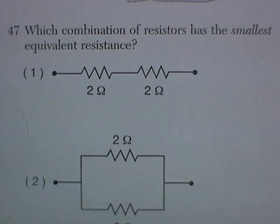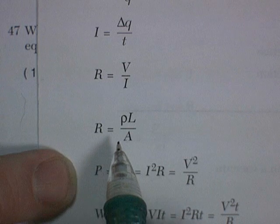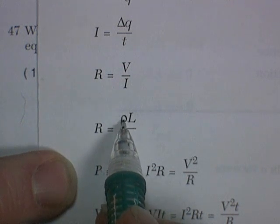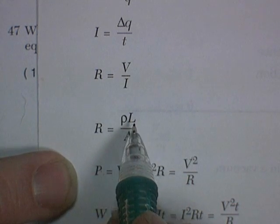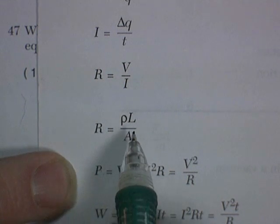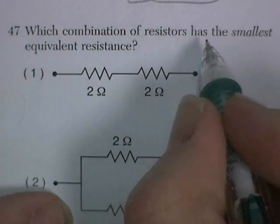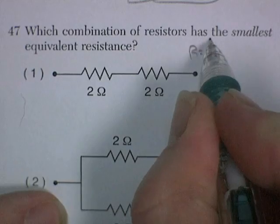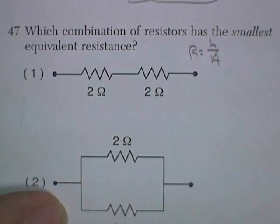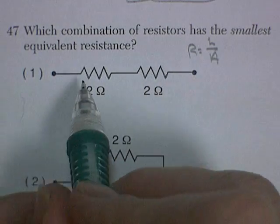Question 47, which combination of resistors has the smallest equivalent resistance? Well, I always like to throw this formula in there. Resistance is a function of the material. It's proportional to its length. The longer it is, the more resistance. And it's inversely proportional to its cross-sectional area. The fatter it is, the less resistance. So if I write that down here, resistance is length over area.